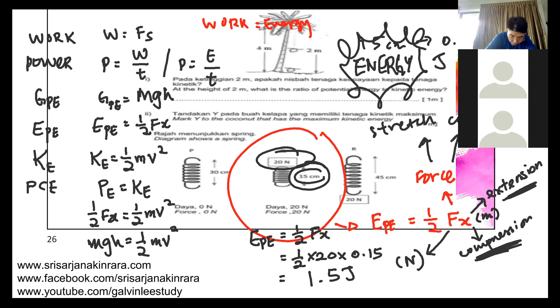So W is in joules, F in newtons, S in meters. Power is talking about the rate of work done, the speed of how fast you do work. If you do the same work with your friend who does it faster, that's called power. P is in watts, P equals W over T.